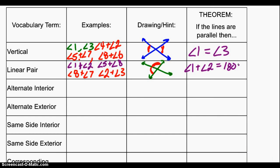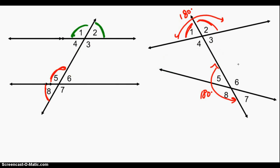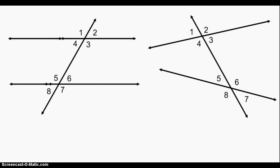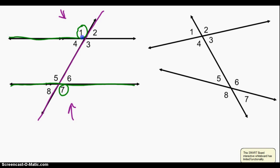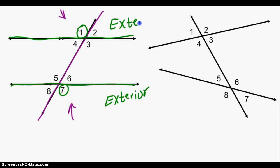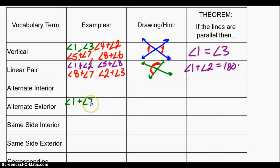What about alternate interior and alternate exterior angles? Let's take a look at the diagram. The word "alternate" means that we're going to pick one angle from this side of our transversal, and one angle from the other side of our transversal — alternate sides. Alternate exterior angles are two angles that are on opposite sides and on the outside — the exterior — of the two parallel lines. So angles one and seven might be called alternate exterior angles. Pause the video here and see if you can figure out another pair — there is only one.